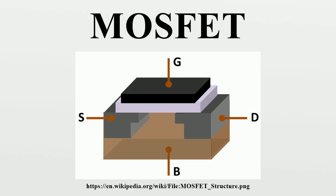A variety of symbols are used for the MOSFET. The basic design is generally a line for the channel with the source and drain leaving it at right angles and then bending back at right angles into the same direction as the channel. Sometimes three line segments are used for enhancement mode and a solid line for depletion mode. Another line is drawn parallel to the channel for the gate. The bulk or body connection, if shown, is shown connected to the back of the channel with an arrow indicating P-MOS or N-MOS. Arrows always point from P to N, so an N-MOS has the arrow pointing in.